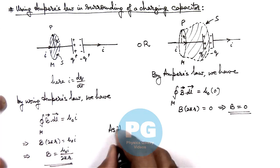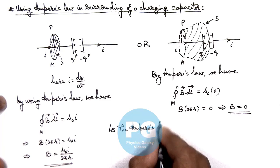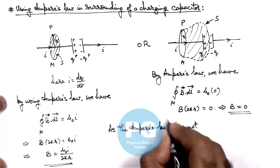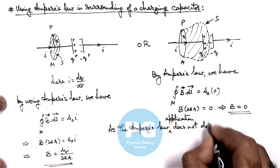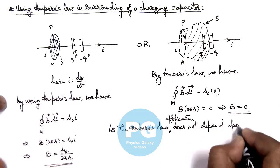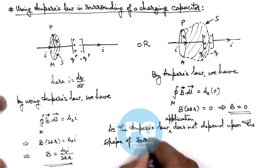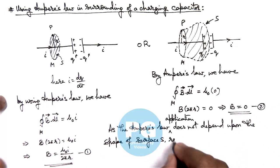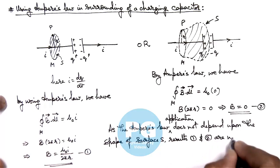Using Ampere's law for path M, the line integral of B dot dL remains the same on the left side. However, the current intercepting through surface S is zero, as no current flows directly through the region between the plates. So we get B × 2πR = 0, giving magnetic induction at point P equal to zero. There is an inconsistency: the result must be the same no matter what surface S we choose, yet here we are getting two different results.